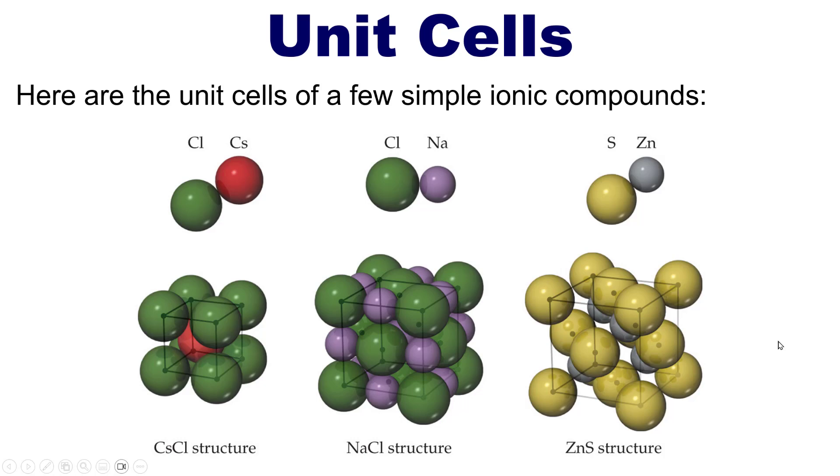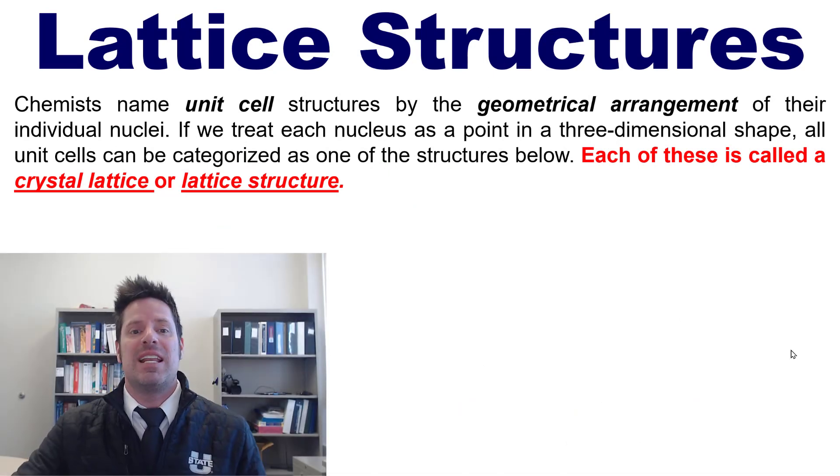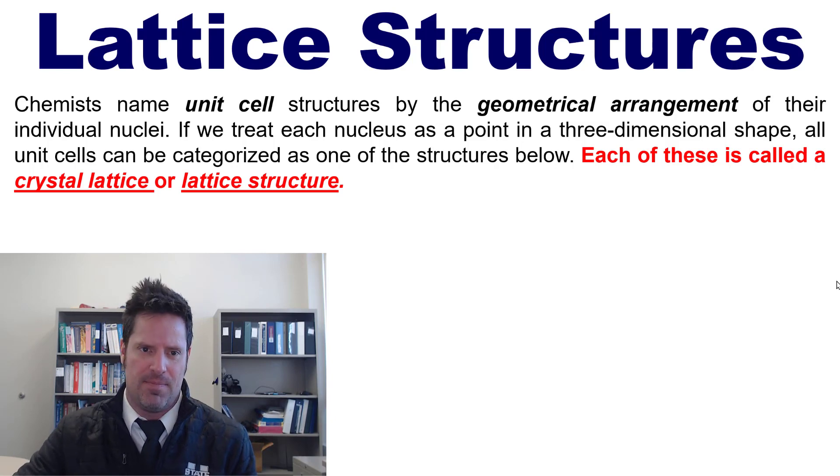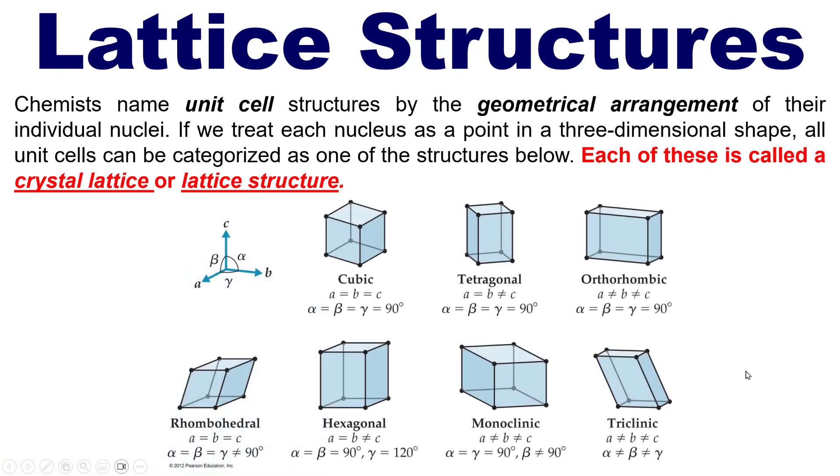This dovetails beautifully then into our next subject, lattice structures. So chemists name unit cell structures by the geometric arrangement of their individual nuclei. If we treat each nucleus as a point in a three-dimensional shape, then all unit cells can be categorized into one of the structures below. Each of these is called a crystal lattice or lattice structure.